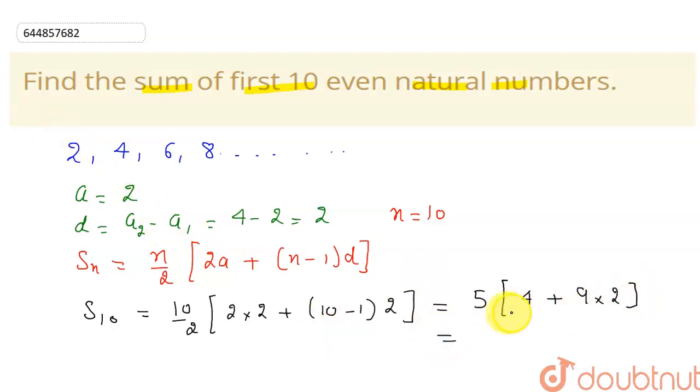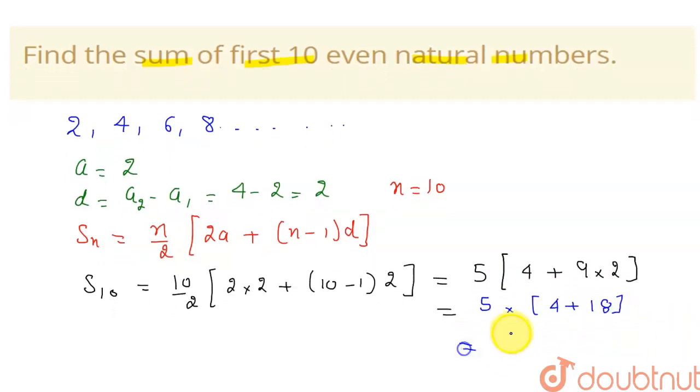This will equal 5 into [4 + 18], which equals 5 into 22, which comes out to be 110. So the sum of my first 10 even natural numbers will be 110.